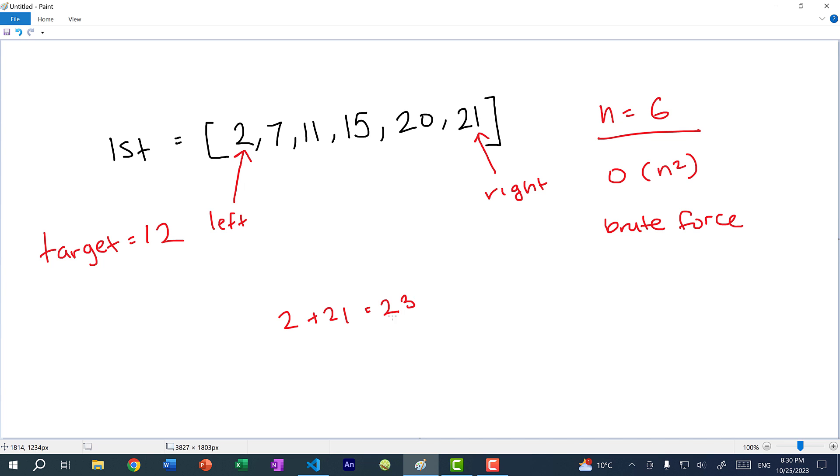2 plus 21 is equal to 23, so obviously this number is too big. So what should we do? Well, if this number is too big, that means we should have the right side move downwards one. Then 2 plus 20, this is 22, and this is also too big, so right will go down one again. 2 plus 15, also too big. 2 plus 11, also too big because this is 13. Then we get to 2 plus 7, and this is equal to 9, and this is too small.